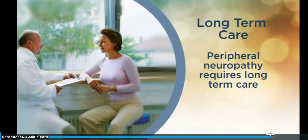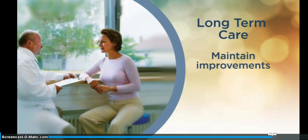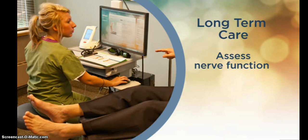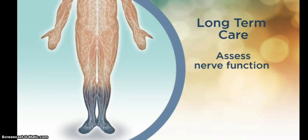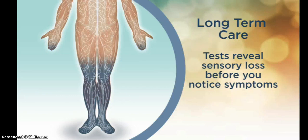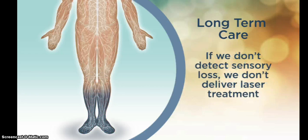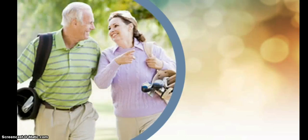Like all chronic conditions, peripheral neuropathy requires long-term care. Once you complete the acute treatment phase, we'll schedule periodic visits to ensure you maintain your symptom and quality of life improvements. We'll review your current symptoms and use our pinwheel and tuning fork tests to assess nerve function. You may or may not require additional maintenance treatments depending on whether or not your symptoms are showing signs of returning. Keep in mind that our tests generally reveal the sensory loss associated with peripheral neuropathy before patients notice increased symptoms. So if we detect sensory loss, we can deliver a single laser treatment before your symptoms return. If we don't detect sensory loss, we'll decide when to schedule another maintenance visit. By the time a patient notices a return of their symptoms, multiple visits may be needed again. Our goal is to prevent the recurrence of symptoms with the fewest maintenance visits and the least out-of-pocket health care costs.